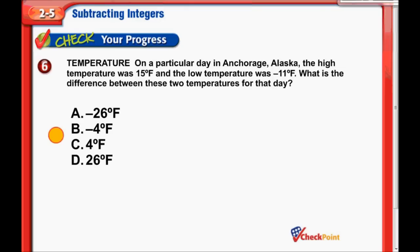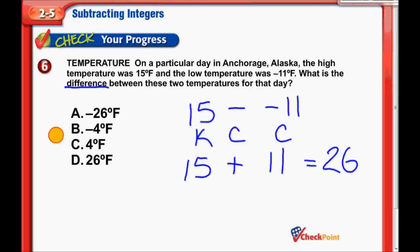Moving on. On a particular day in Anchorage, Alaska, the high temperature was 15 degrees and the low temperature was negative 11 degrees. What is the difference between these two temperatures for that day? Difference tells me we're subtracting. So I need the difference between 15 degrees Fahrenheit and negative 11. I need to actually subtract those numbers. Once again, we're going to use our keep, change, change. So I'm going to keep that 15. Change that minus sign. Then the opposite of negative 11 is positive 11. Look at that. Nice, easy problem to solve. That's clearly 26. So the difference between 15 degrees Fahrenheit and negative 11 degrees Fahrenheit is actually 26 degrees. They're 26 degrees apart. That's a big change in temperatures in one day.